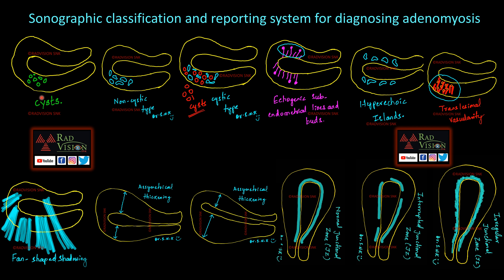Adenomyosis can present as multiple cysts, or sometimes as multiple hyperechoic islands which are considered the non-cystic type. Sometimes there may be both cysts and islands. There can also be echogenic subendometrial lines and subendometrial buds. Here you can see hyperechoic islands, and also a focal lesion with raised translesional vascularity.